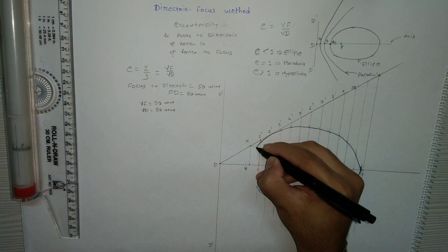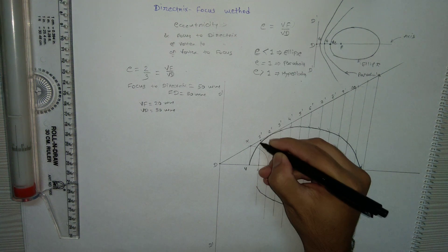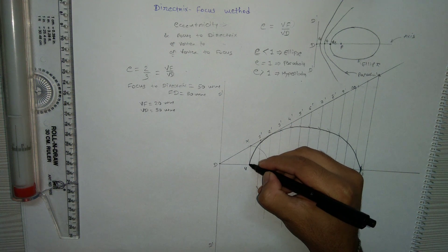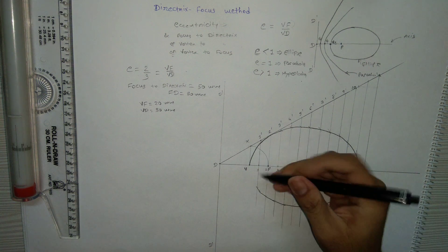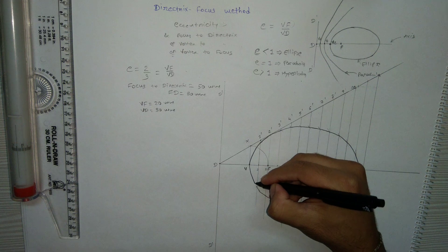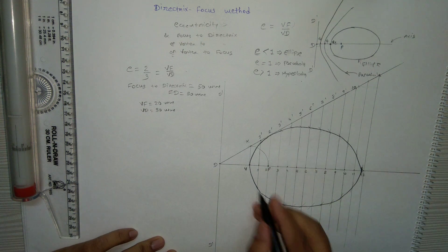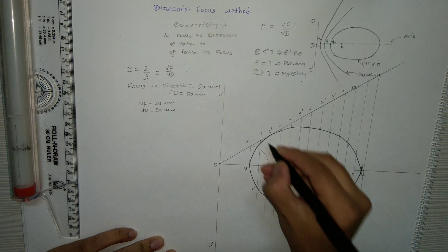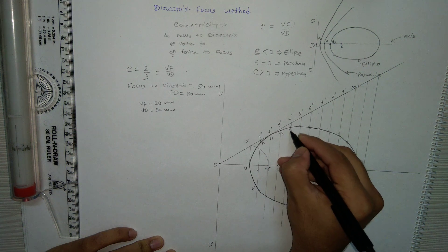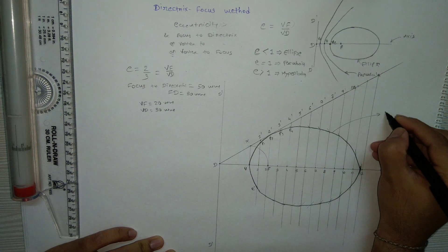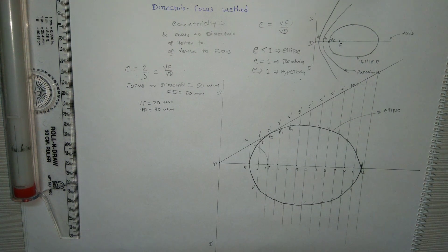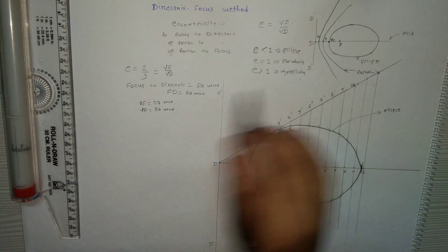Connect point P1 with the vertex, and from the vertex on the other side, name the points as P1, P2, P3, and so on. This gives the required ellipse.